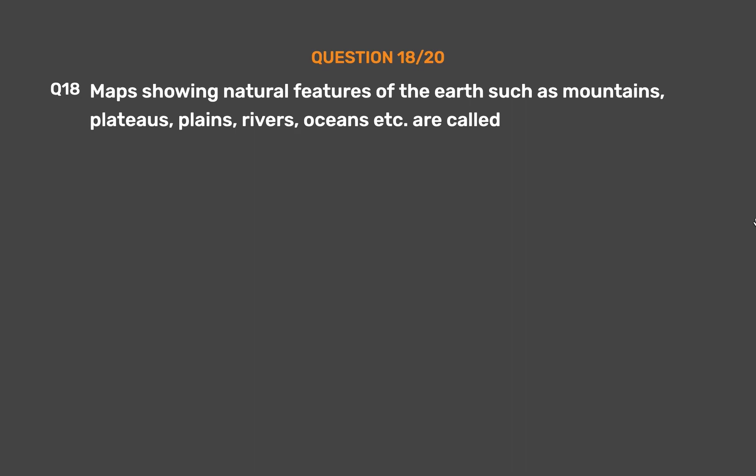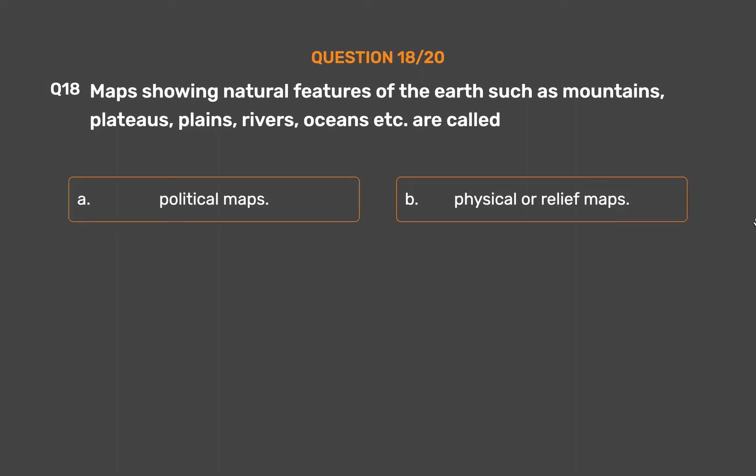Question number 18. Maps showing natural features of the earth such as mountains, plateaus, plains, rivers, oceans, etc. are called — Option A: Political maps. Option B: Physical or relief maps.